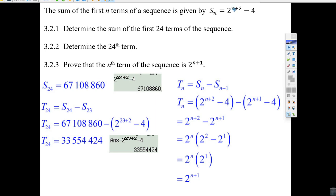Well, minus four, minus minus four is zero. And then you have 2 to the n plus two minus 2 to the n plus one.